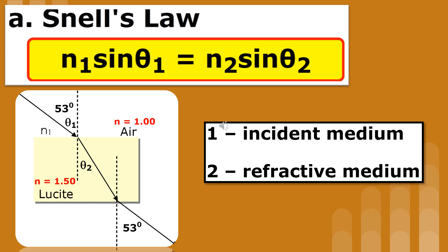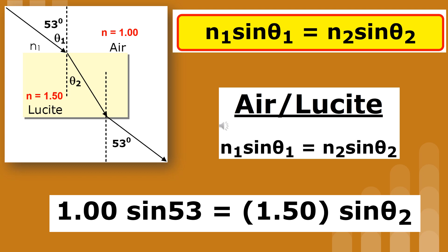Snell's law states that N1 sine theta 1 equals N2 sine theta 2, where N1 is the index of refraction of the first medium and N2 is the index of refraction of the second medium. Theta 1 is the angle of incidence, and theta 2 is the angle of refraction. Using the reference table, we find that the index of refraction of air and lucite is 1 and 1.5. The first medium is air, and the first angle is 53 degrees.